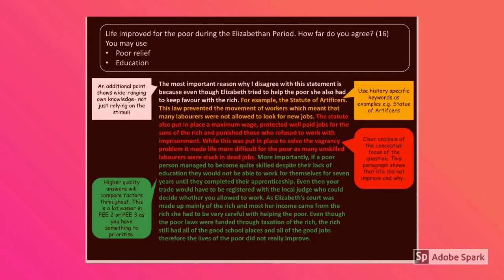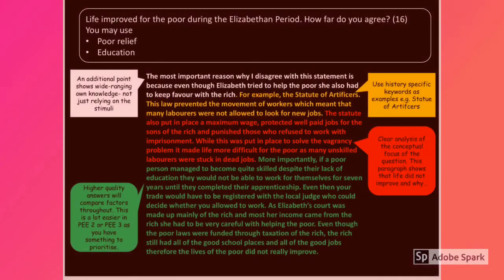'Even then, your trade would have to be registered with the local judge, who could then decide whether or not you were allowed to work. As Elizabeth's court was made up mainly of the rich and most of her income came from the rich, she had to be very careful when helping the poor. Even though the poor laws were funded through taxation of the rich, the rich still had all of the good school places and all of the good jobs. Therefore, the lives of the poor could never really improve because Elizabeth was always looking out for the interests of the rich.'